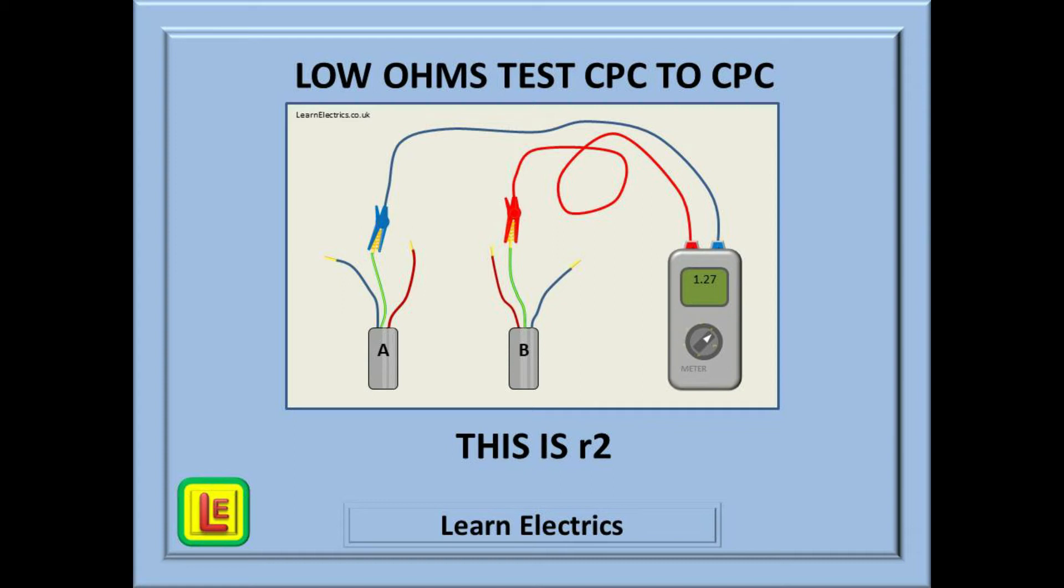And now we carry out the same end-to-end test between the two ends of the CPC or earth conductor. This is little r with a number two, and this signifies the end-to-end test of the CPC. With twin and earth cable, the CPC or earth is smaller than the line or neutral. This means the resistance reading should be higher. It is actually about 1.67 times bigger. So 0.76 for the line means about 1.27 ohms for the CPC, and we can write this down too.